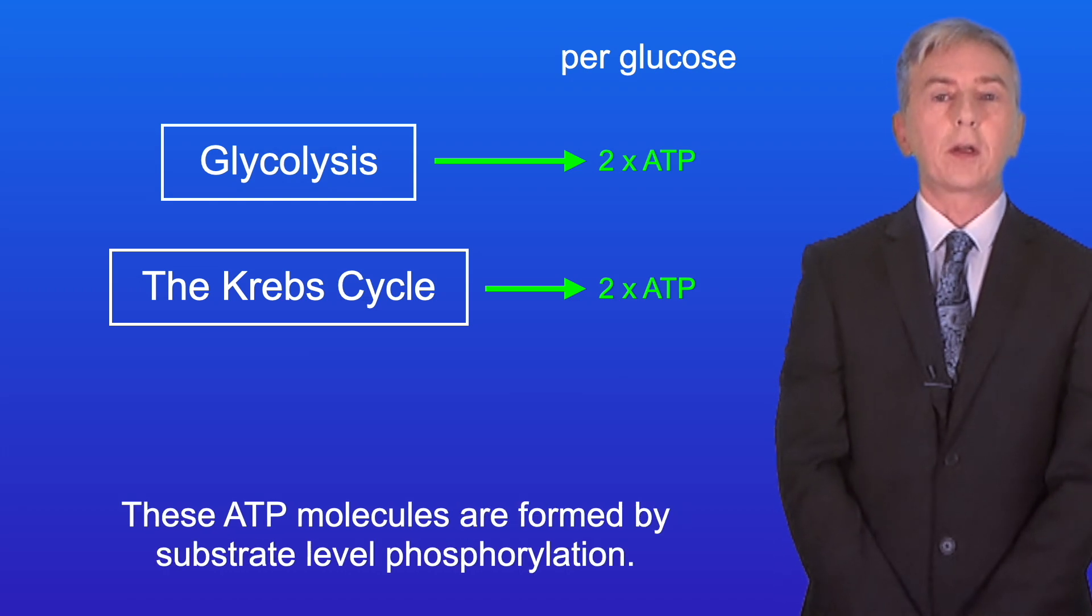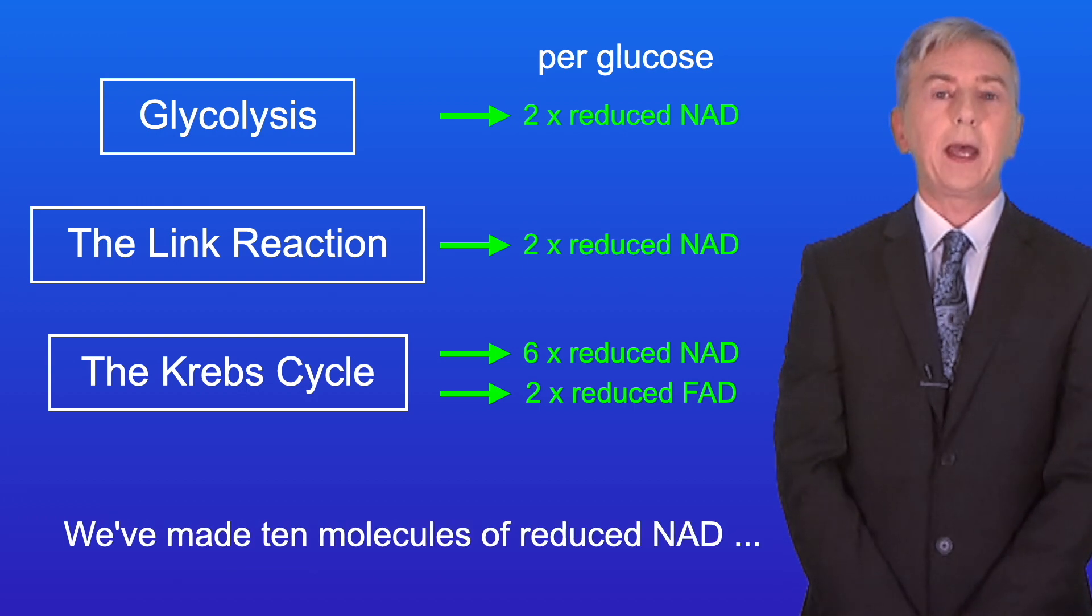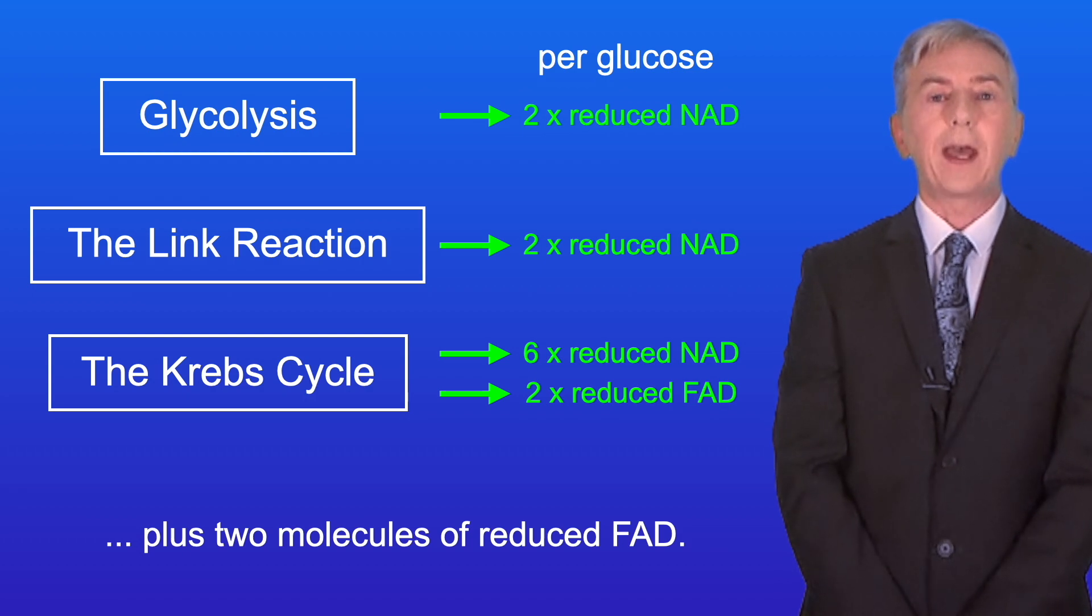These ATP molecules are formed by substrate level phosphorylation. Now we've also produced 12 molecules of reduced hydrogen carriers. We've made 10 molecules of reduced NAD, plus two molecules of reduced FAD.